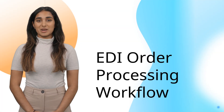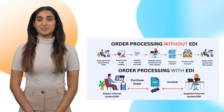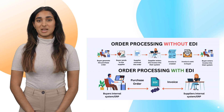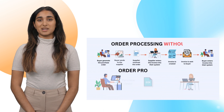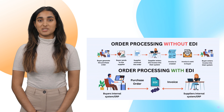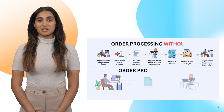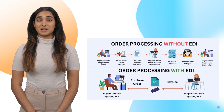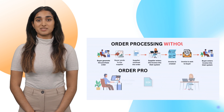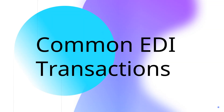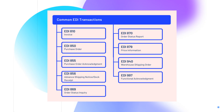Let's understand how EDI transforms order processing. EDI streamlines order management by automating the exchange of business documents between retailers and suppliers. It enables retailers to electronically transmit purchase orders, invoices, and delivery notes, eliminating manual processes and reducing errors. Common EDI transactions include purchase orders, invoices, advanced shipping notices, and order status inquiries. These transactions follow specific formats and codes, facilitating efficient data exchange and tracking.